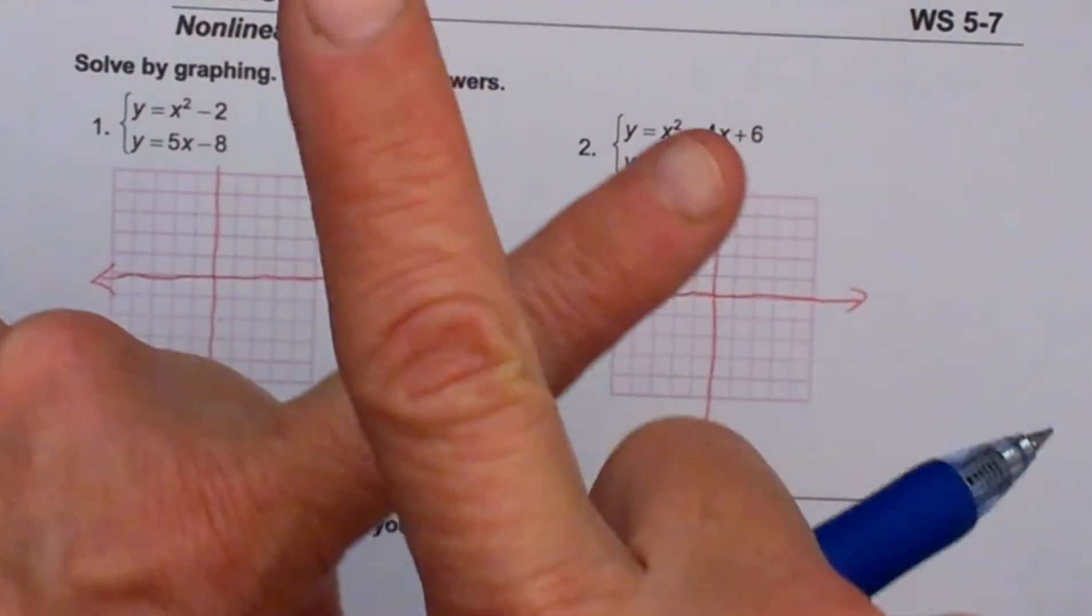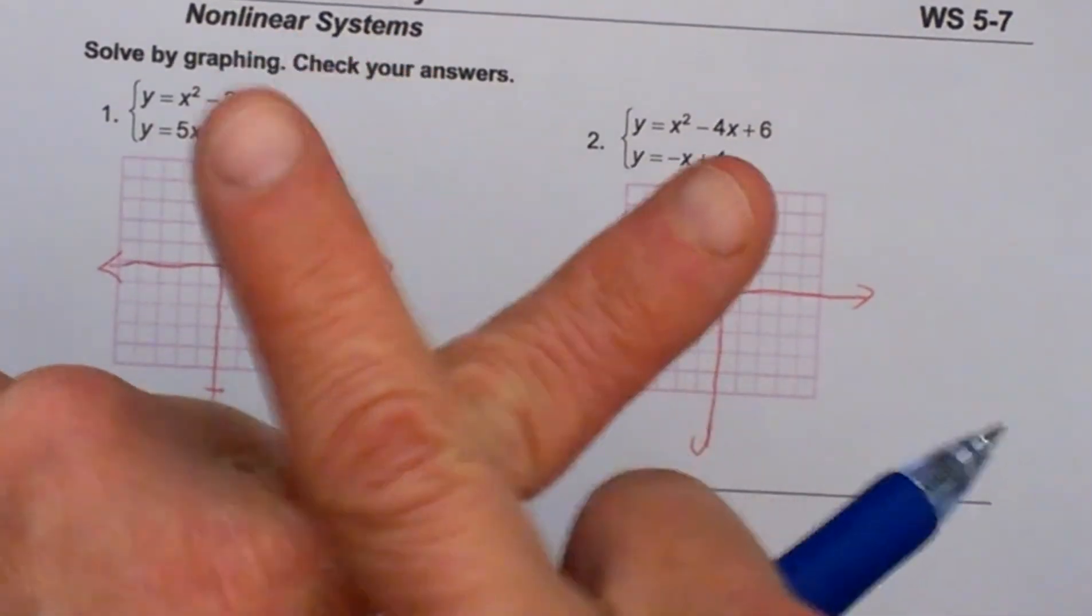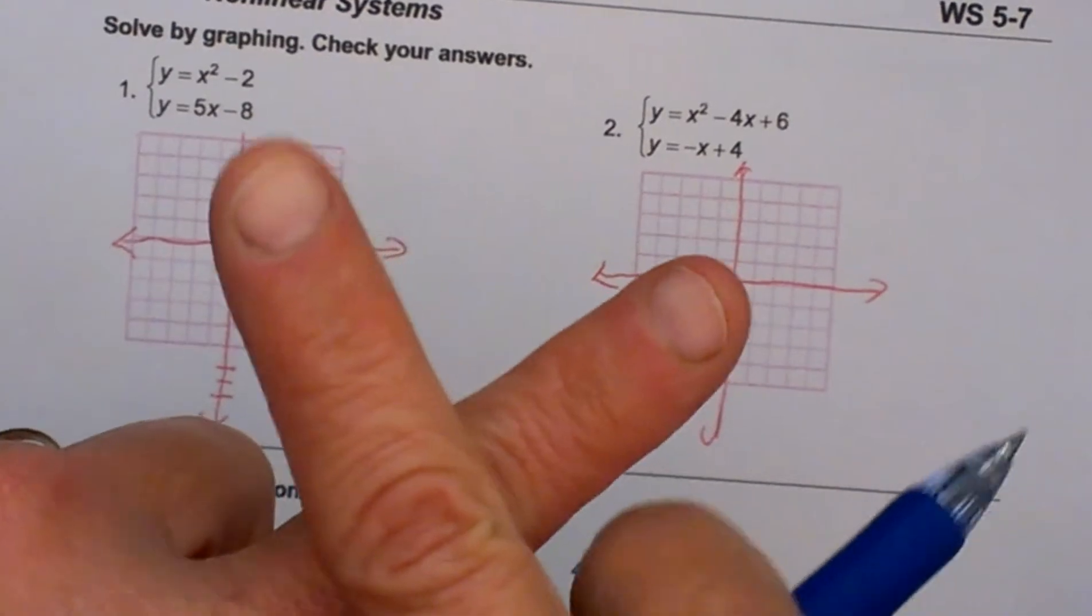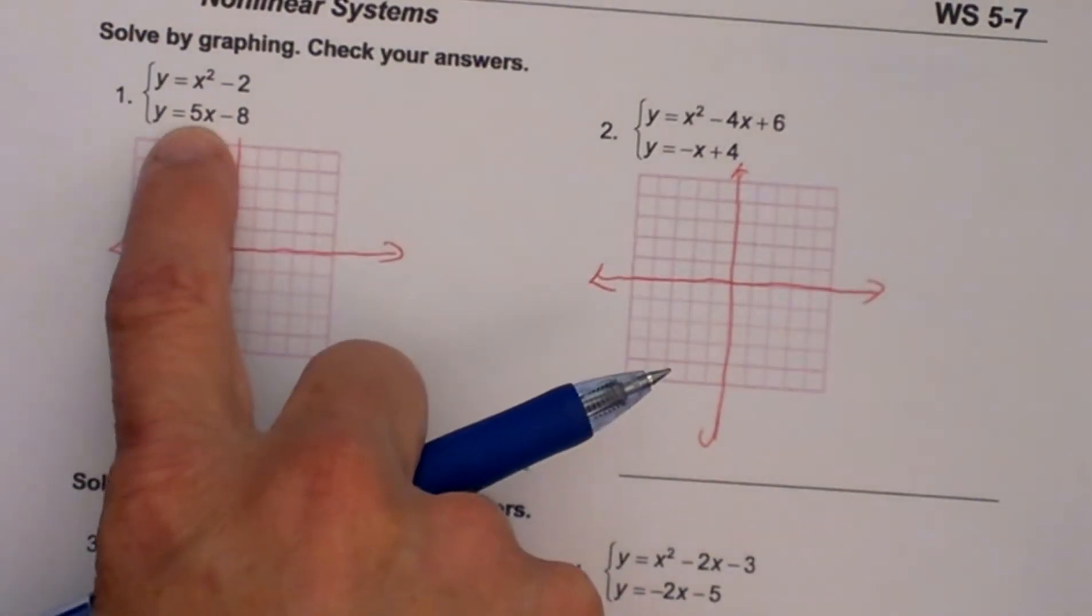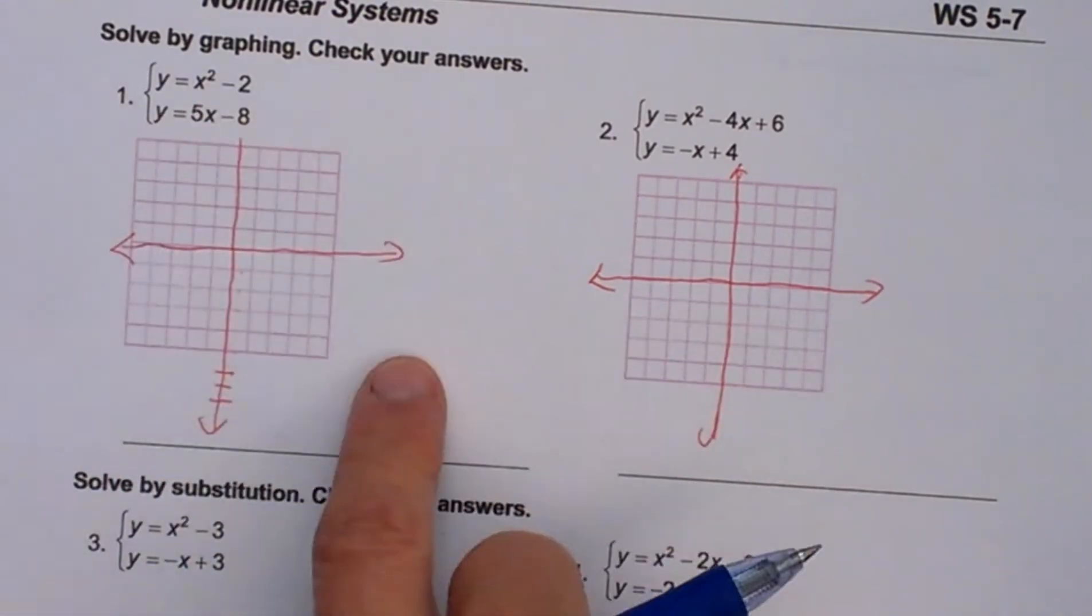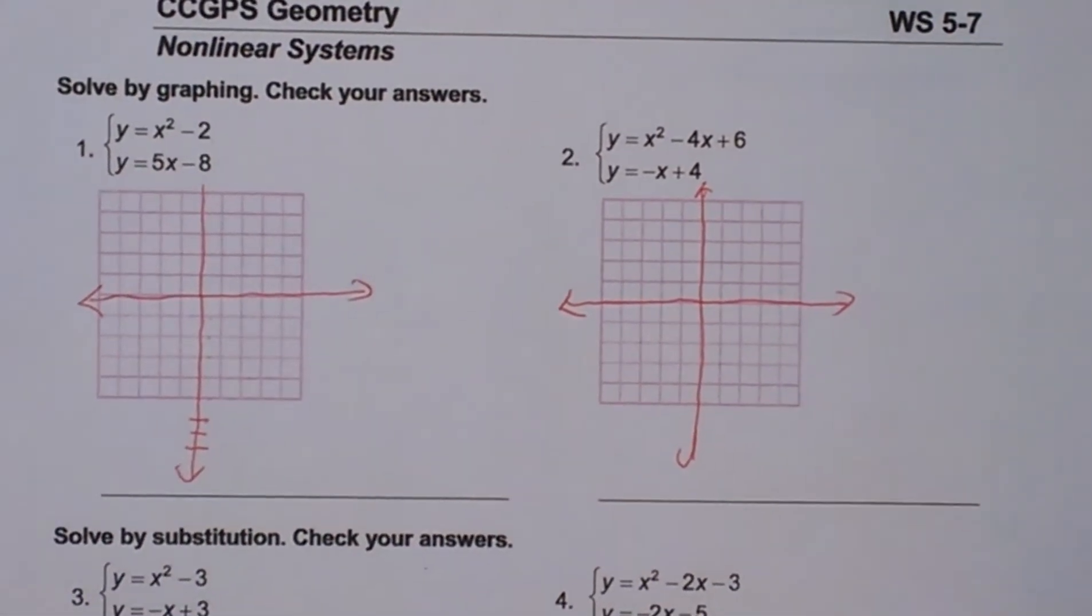Now remember solving a system is when two lines cross, a system of equations of a line, when two lines cross that is the point where those two lines cross. Same idea with a parabola and a line. You are going to draw a parabola, and then draw a line, and then see where they cross. That is what we are doing.